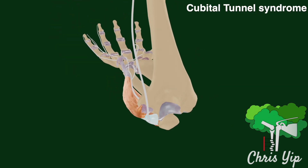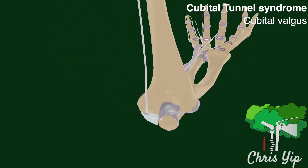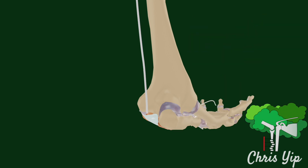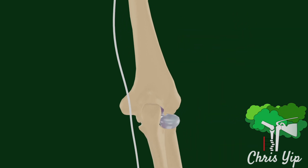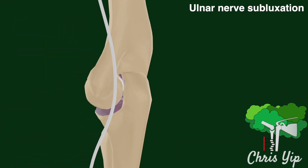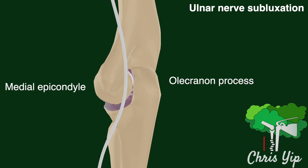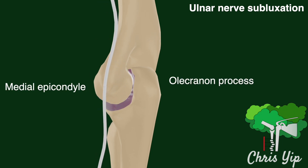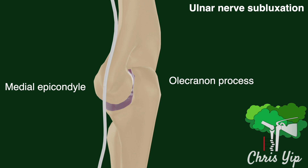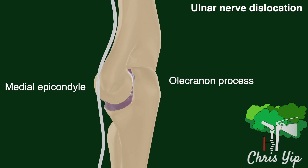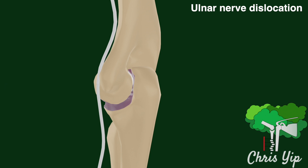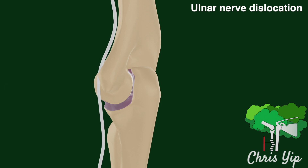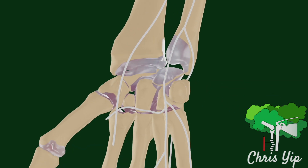Symptoms are worse in patients with cubital valgus, as the nerve is pulled further away from the elbow. An additional cause could be due to ulnar nerve subluxation, which is when the nerve moves away from the groove formed by the medial epicondyle and the olecranon to the medial edge of the medial epicondyle. An ulnar nerve dislocation can also occur where the ulnar nerve moves anteriorly to the medial epicondyle. A subluxation or dislocation is more likely to happen during elbow flexion as the nerve is tensioned.